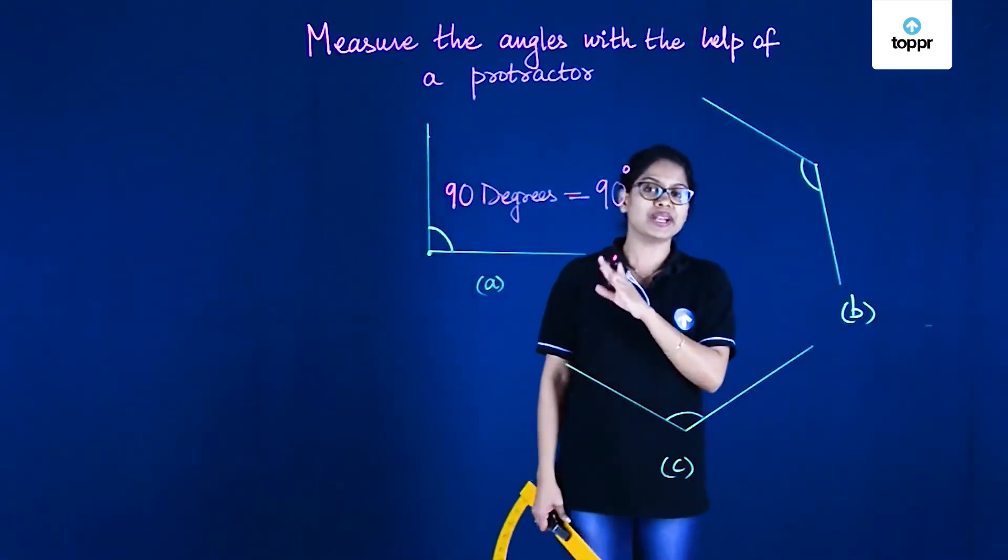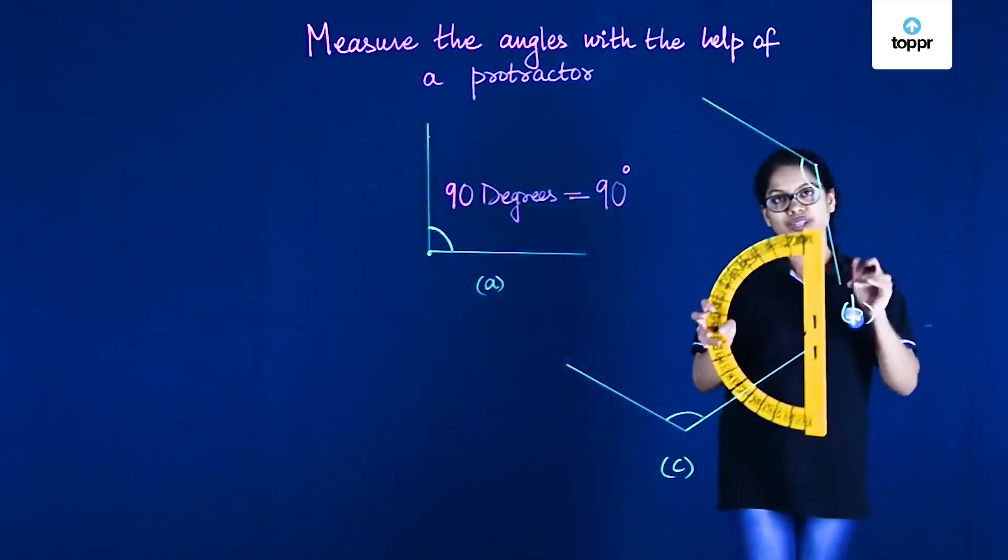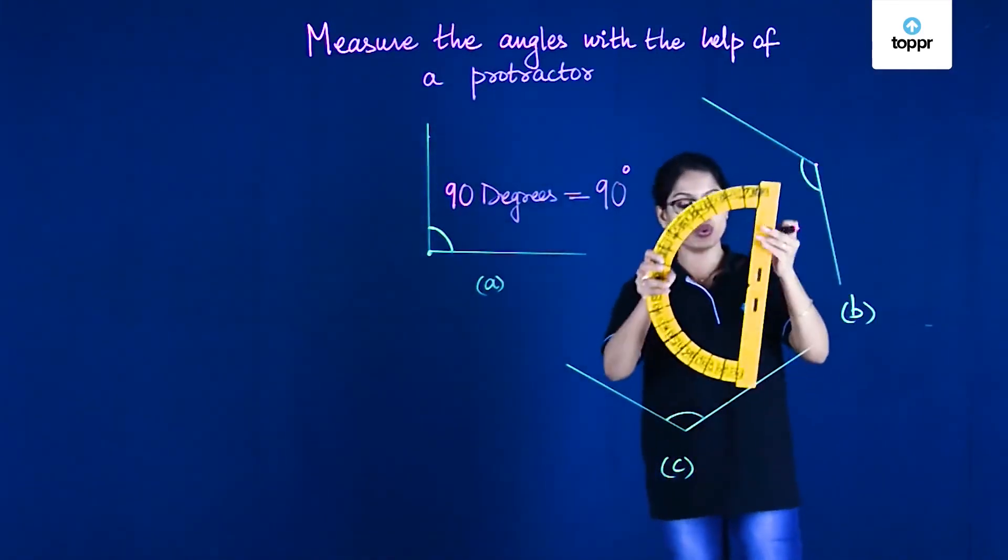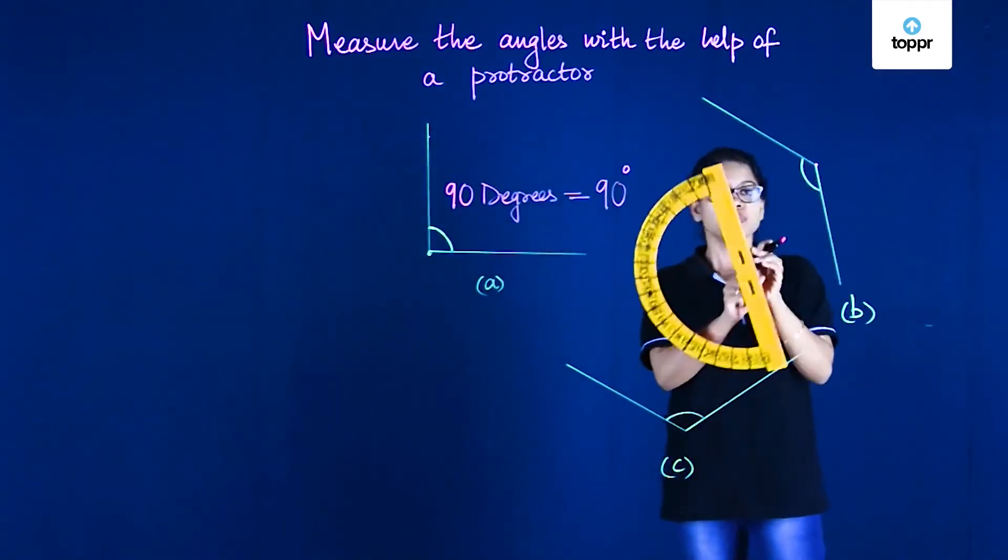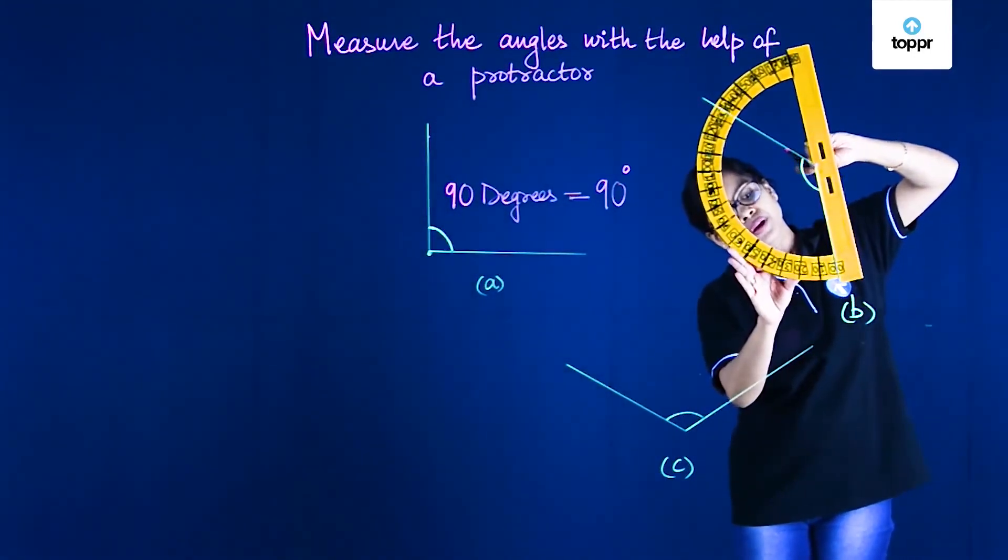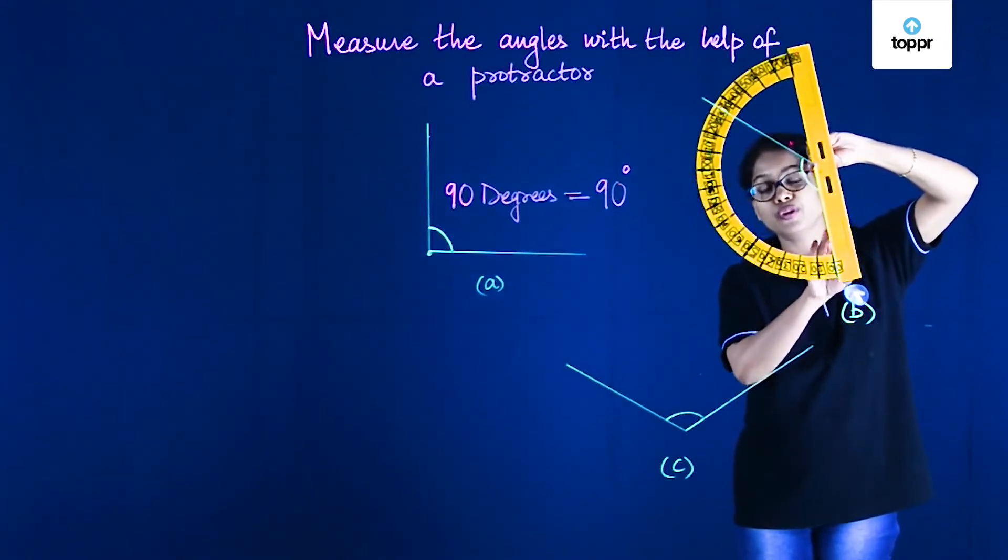Now exactly in the same way, let's measure another angle that I have here. This is where we have the vertex, which we need to ensure coincides with the middle point over here. So here I'm placing the protractor.